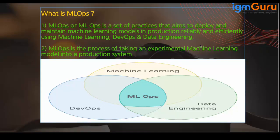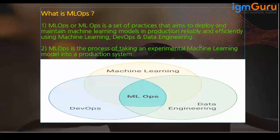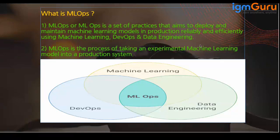So I thought: why can't we integrate DevOps practices with machine learning? Why can't we automate the data pipelines we use for our machine learning models, and automate the machine learning pipeline the way delivery happens in DevOps using CI/CD? MLOps is the process of taking an experimental machine learning model into a production system.